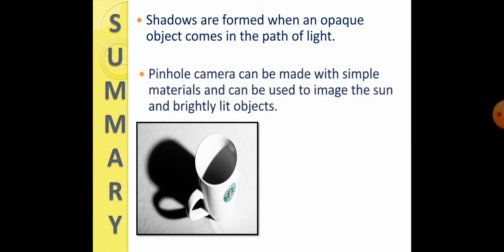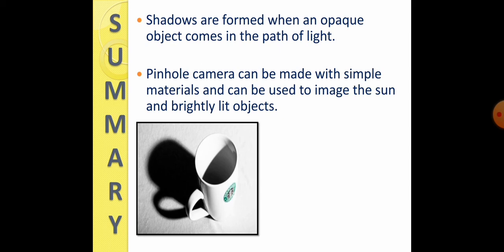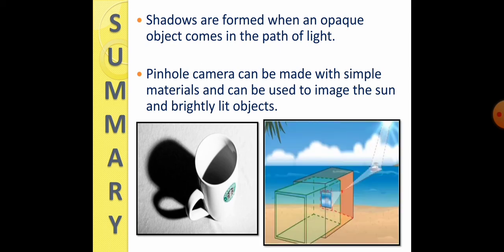Now, next point is, pinhole camera can be made with simple materials and can be used to image the sun and brightly lit objects. It is very simple to make a pinhole camera with a cardboard, or you can say, with a box. So, it is very easy to make. And it helps us to see the things, things like lit objects and sun. And it gives the inverted image of the objects.